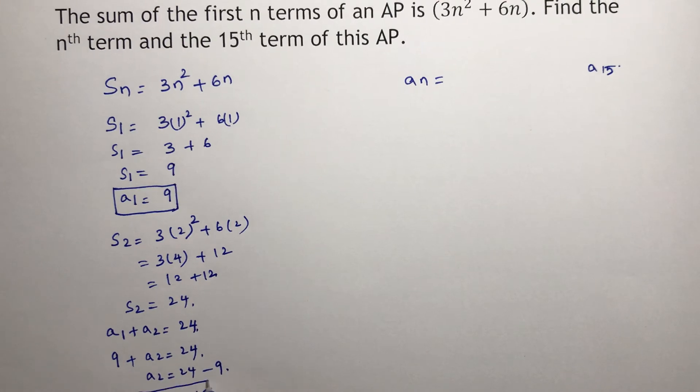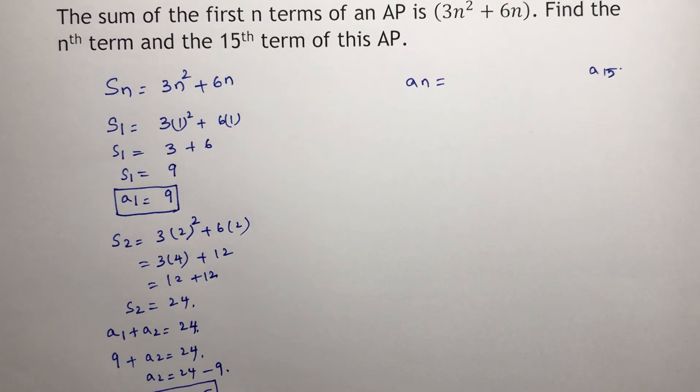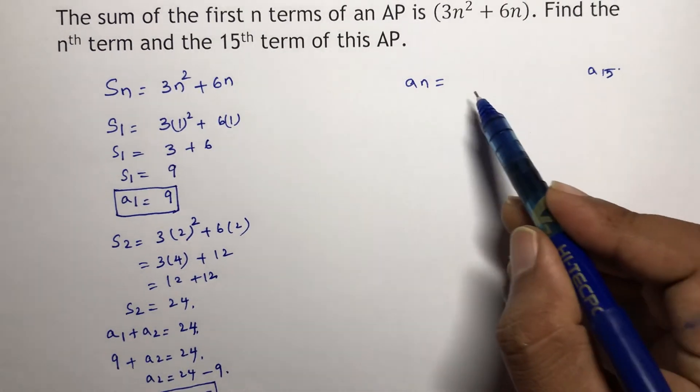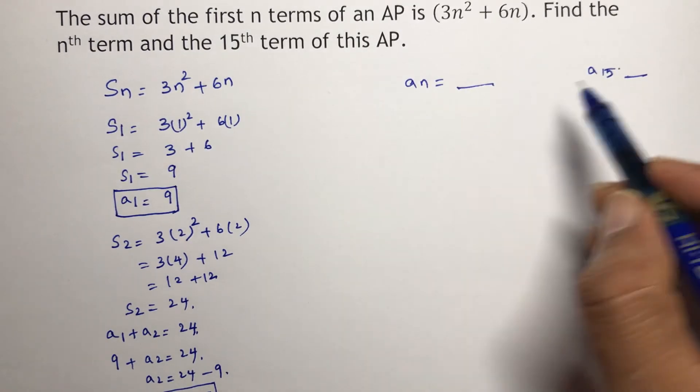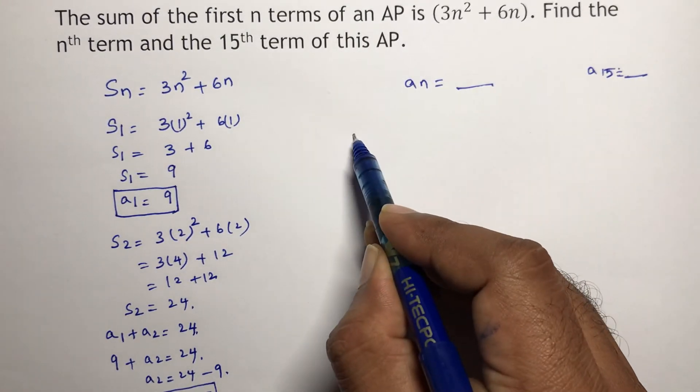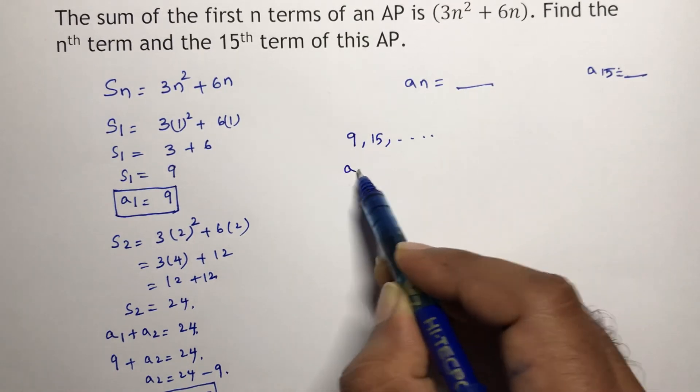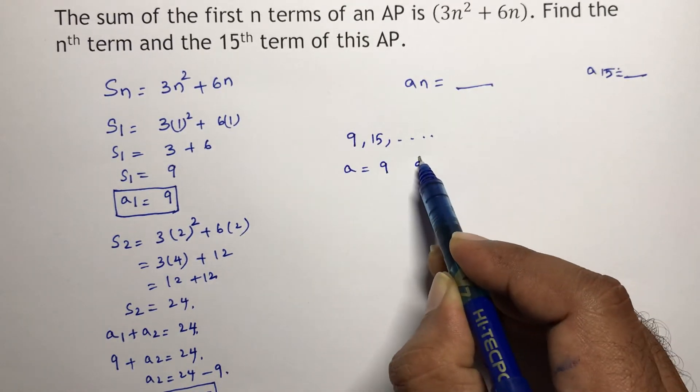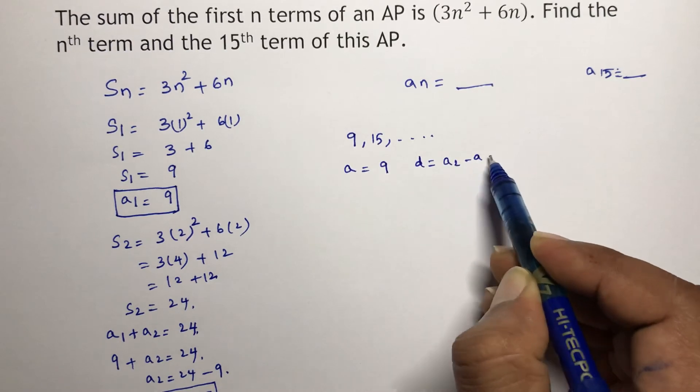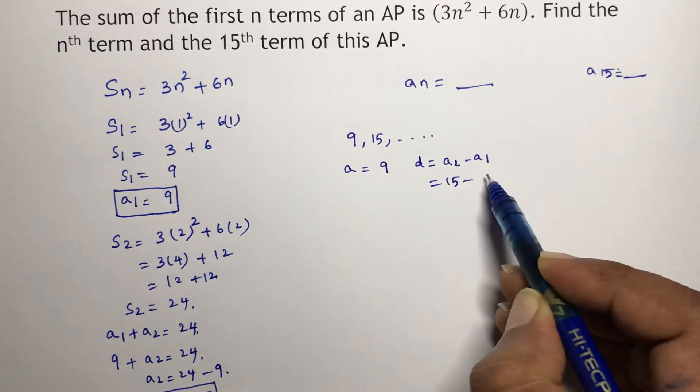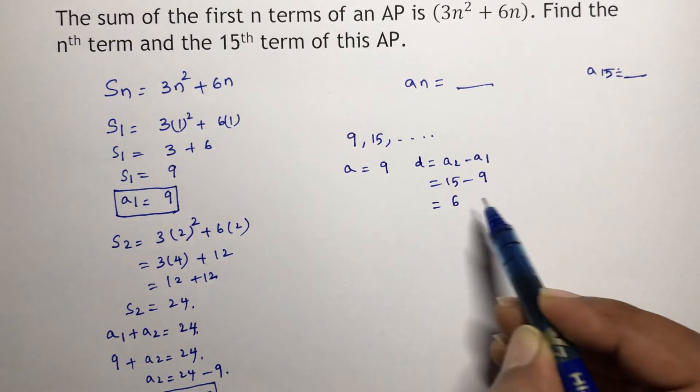So you got the first term and second term, so almost you got the series. So here you can write the series 9, 15, and so on. So what is the first term? 9. Now find the common difference, A_2 minus A_1: 15 minus 9, which is nothing but 6.